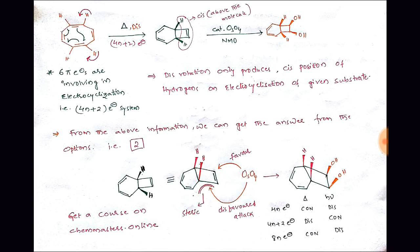Looking at the rules: if we have a 4n electron system thermally, conrotation is allowed; if we have a 4n electron system photochemically, disrotation is allowed. And if we have a 4n+2 electron system — thermally, disrotation is allowed; photochemically, conrotation is allowed.